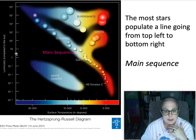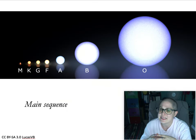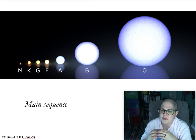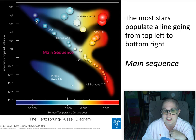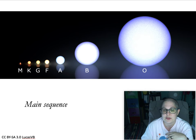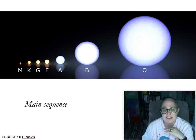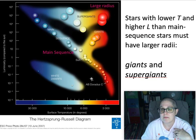Some stars are large and luminous and hot; some stars are small and dim and less luminous. There's a correlation between temperature, luminosity, and size as well. This diagram shows the sizes to scale for each type of star on the main sequence — you can see the enormous difference in size between the hottest O stars all the way down to the coolest M stars. These are specifically main sequence stars we're talking about — stars in the typical time of their life.